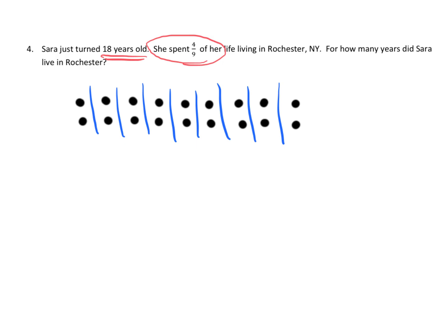So if we want to know 4 ninths of her life, well that's going to be 4 of those. 1, 2, 3, 4 right here. 4 ninths. And we can just count. 4 ninths is 1, 2, 3, 4, 5, 6, 7, 8 dots. So that's 8 years. So 4 ninths is 8 years.